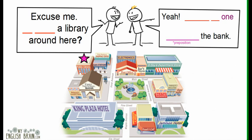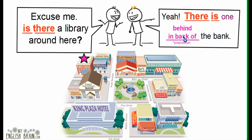Practice using the correct form of 'there is' or 'there are,' the preposition, and the quantifier. For example: Excuse me, is there a library around here? Yes, there's one behind the bank, or in back of the bank.